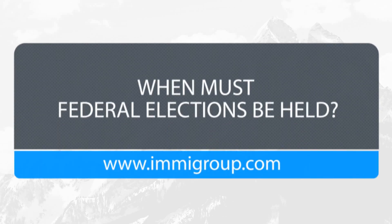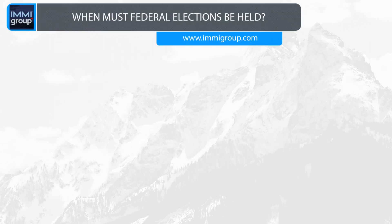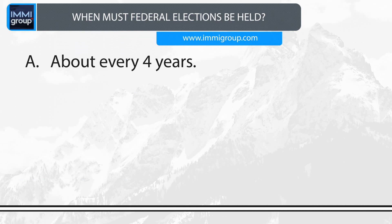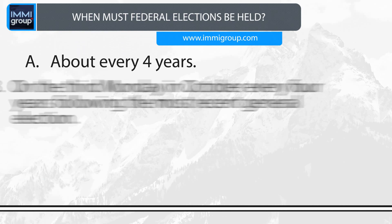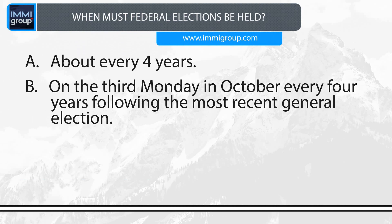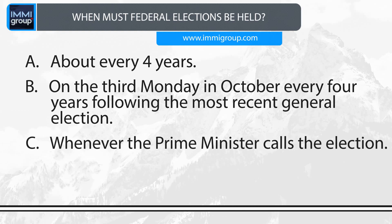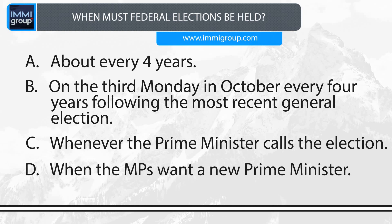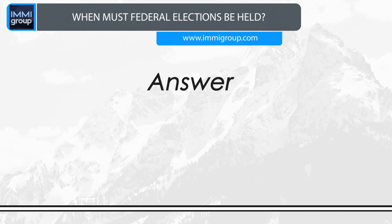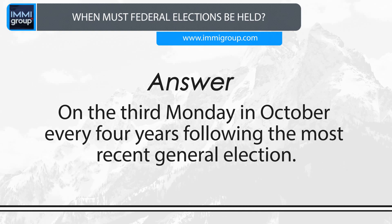When must federal elections be held? A. About every four years. B. On the third Monday in October, every four years following the most recent general election. C. Whenever the Prime Minister calls the election. D. When the MPs want a new Prime Minister. Answer: On the third Monday in October, every four years following the most recent general election.